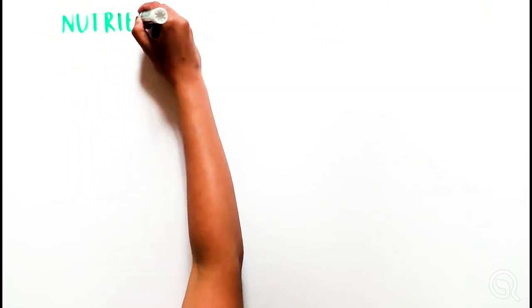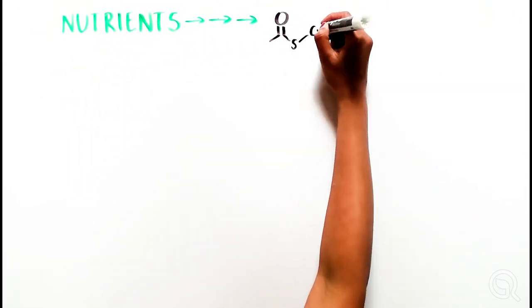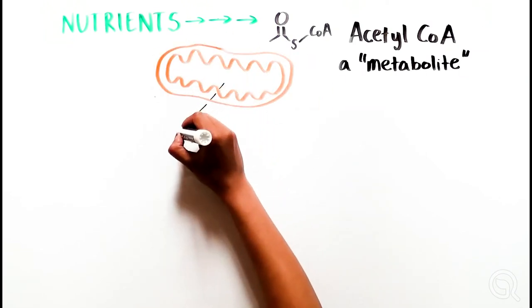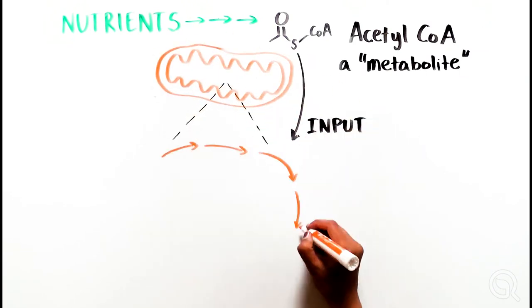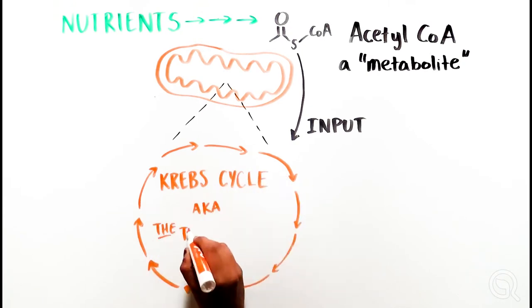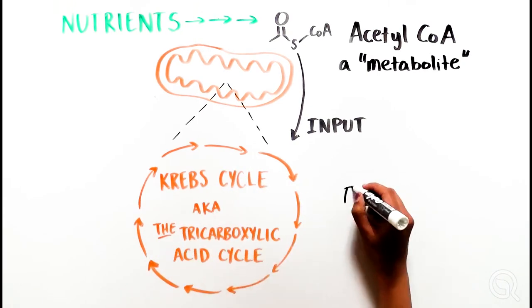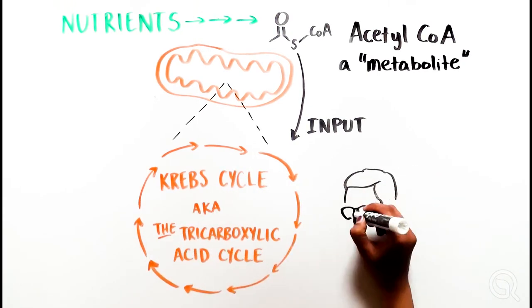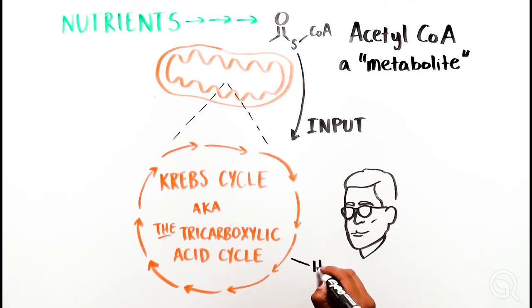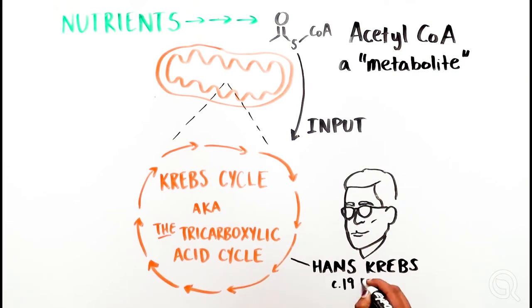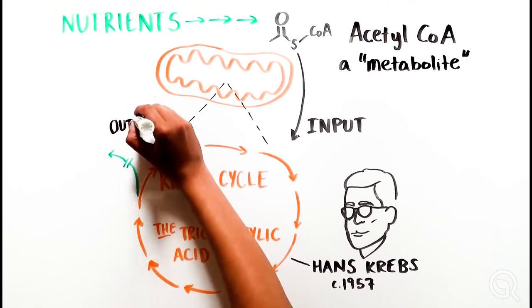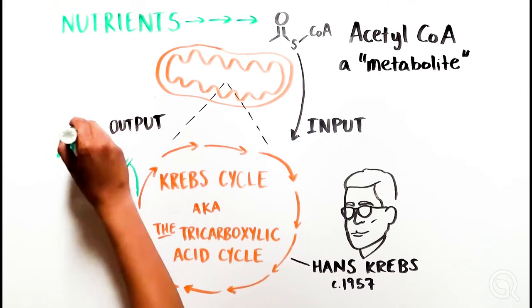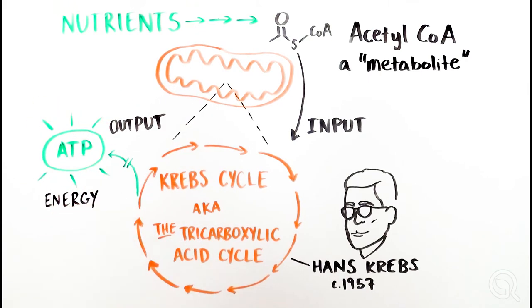Most of these nutrients get broken down into acetyl-CoA. If this is inside the mitochondria, this metabolite enters the Krebs cycle, also known as tricarboxylic acid cycle. This cycle is named after Hans Krebs, who first described it in 1957. The Krebs cycle uses acetyl-CoA to produce much of the ATP produced within the cell.